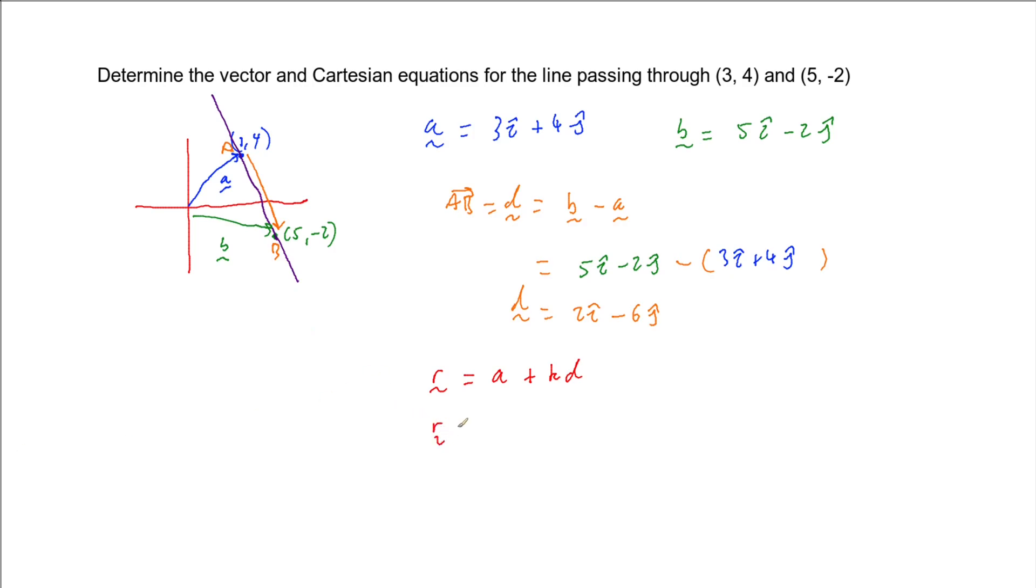So that means that our vector equation for this line is going to be r. We'll start with our vector a, 3i plus 4j, and then add on k lots of our vector d, which is 2i minus 6j. And then tidying this up gives us r = (3 + 2k)i + (4 - 6k)j.